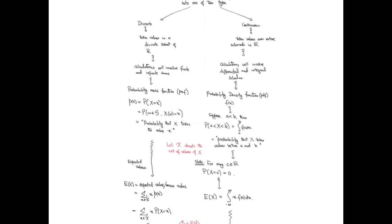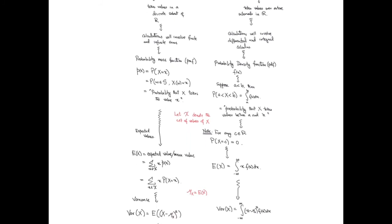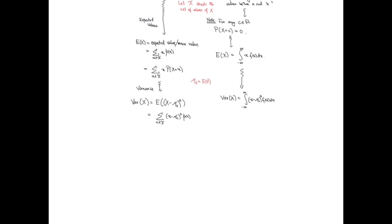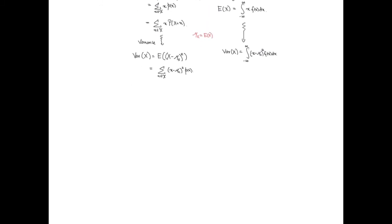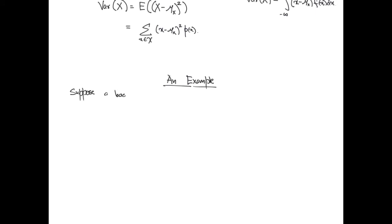Just to look back what we have done so far, two types of random variables and the expected value and variance. To finish off this video, I will briefly work through an example in the discrete case.